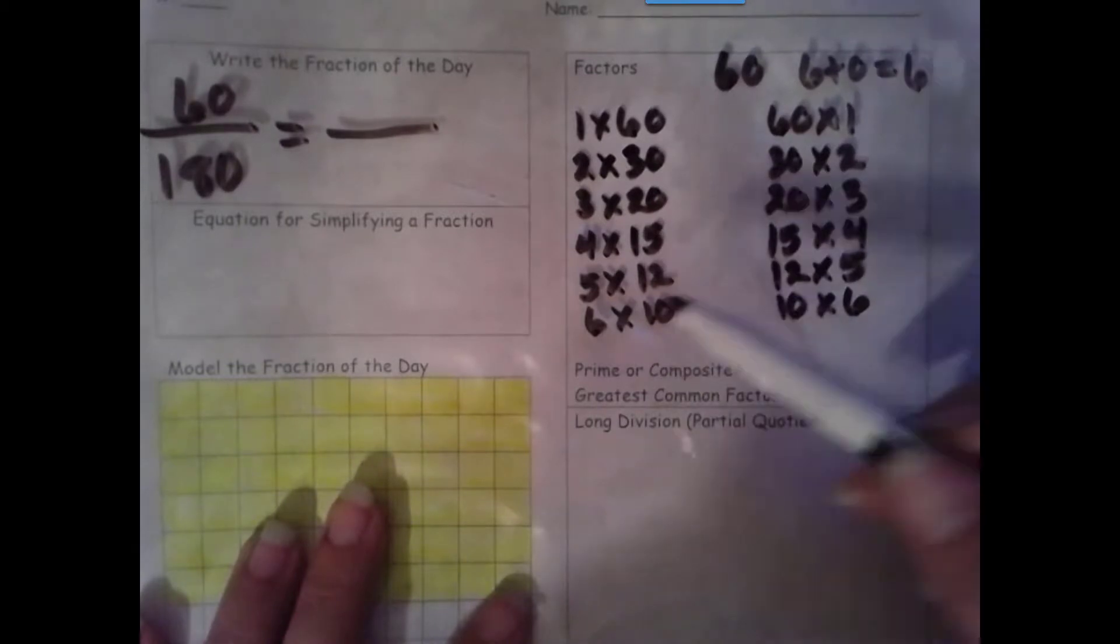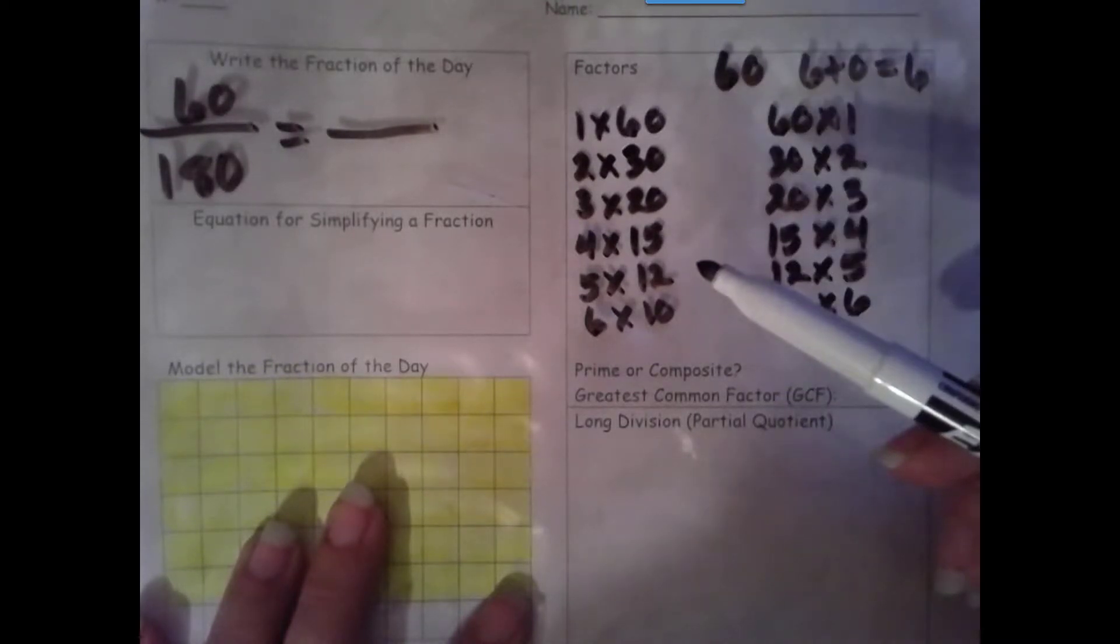7. We just list our factors: 7, 14, 21, 28, 35, 42, 49, 56, 63, 70. 60 is not in that list, so 7 is not a factor.